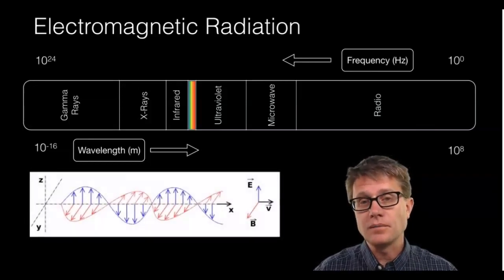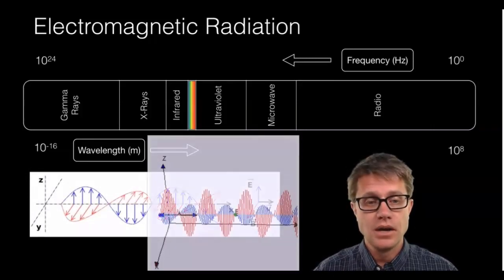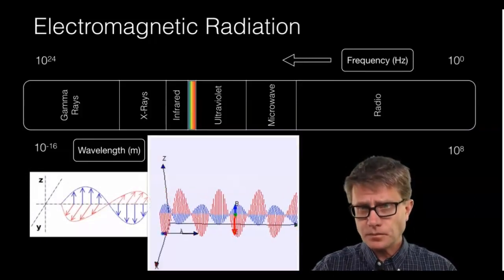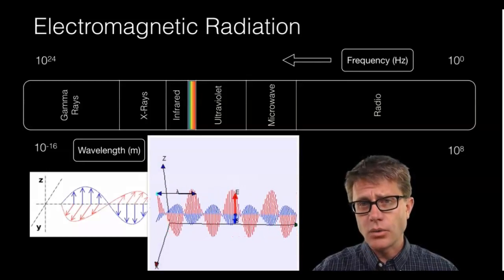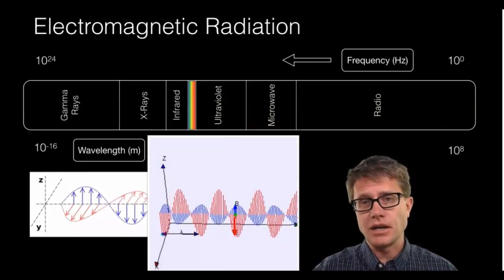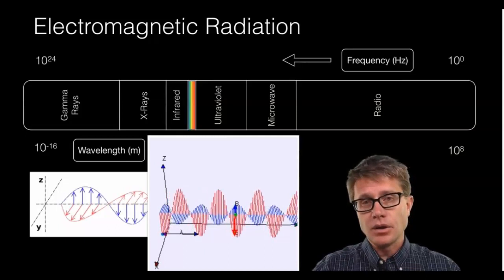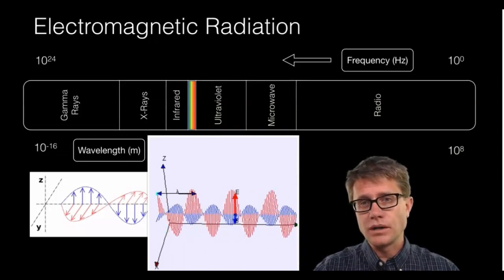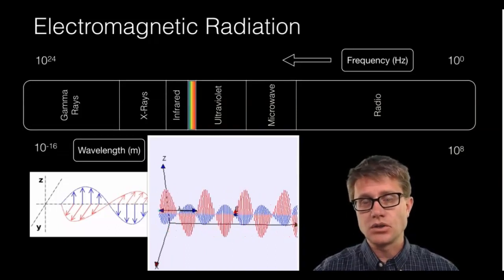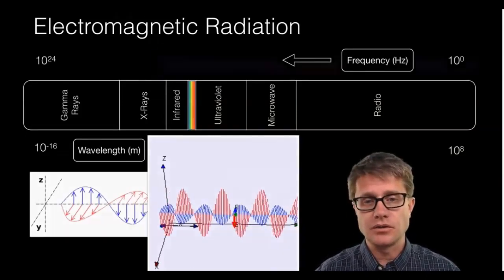Our model up to the time of Einstein was that light was a transverse wave — traveling in one direction with electric and magnetic fields acting perpendicular to that — one continuous wave that was able to, for example, interfere.